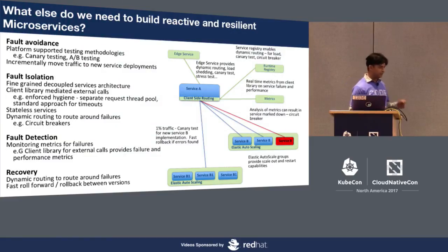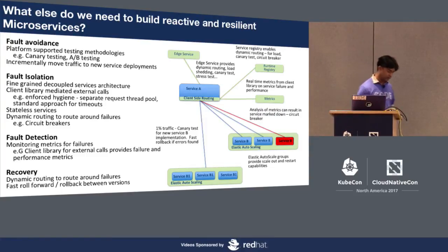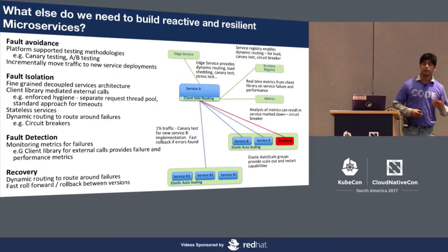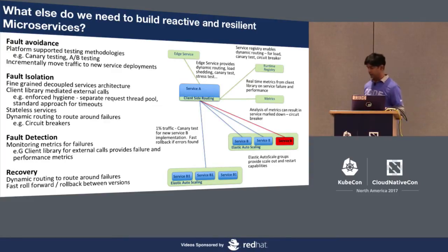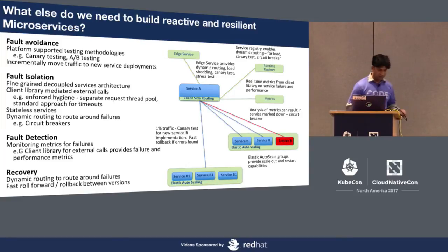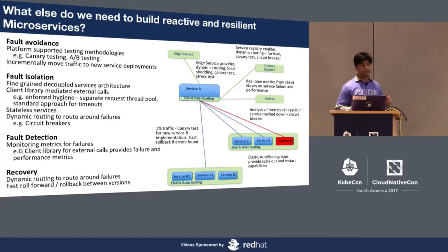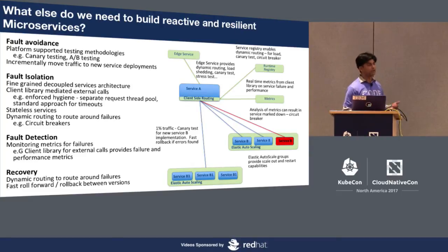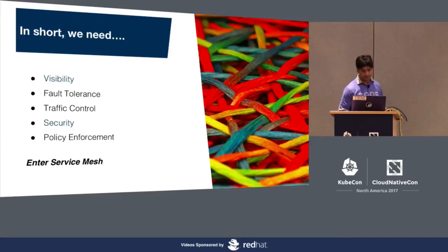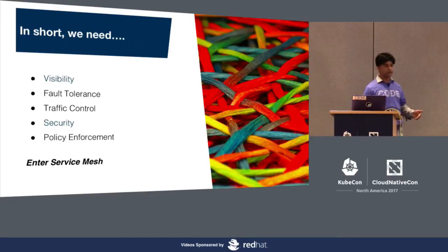We need to build fully reactive and resilient microservices. For that we need mechanisms to actually avoid faults — so when doing canary testing, A-B testing, or rolling out new versions, you need to be able to selectively route traffic. You need fault isolation with circuit breakers and bulkheads. You need to detect faults when they happen with great metrics capability, and then recover gracefully. In short, what we need is strong visibility, fault tolerance, traffic control, and a way to enforce security and policies.